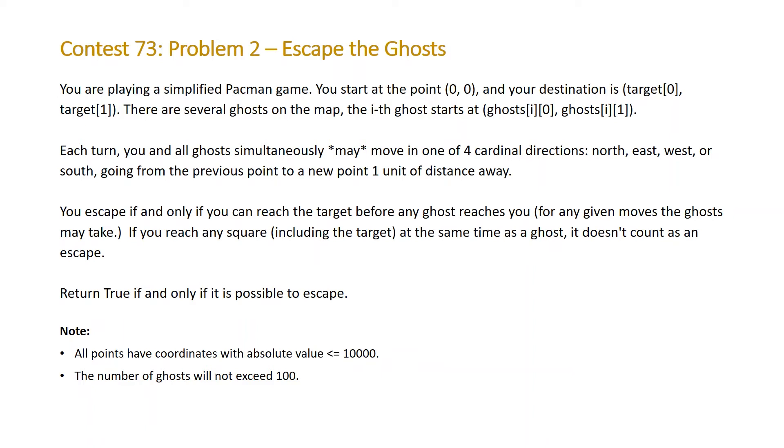And note that our coordinates can be both positive and negative, and the absolute value will be less than 10,000, and we'll have at most 100 ghosts. So let's take a look at an example.